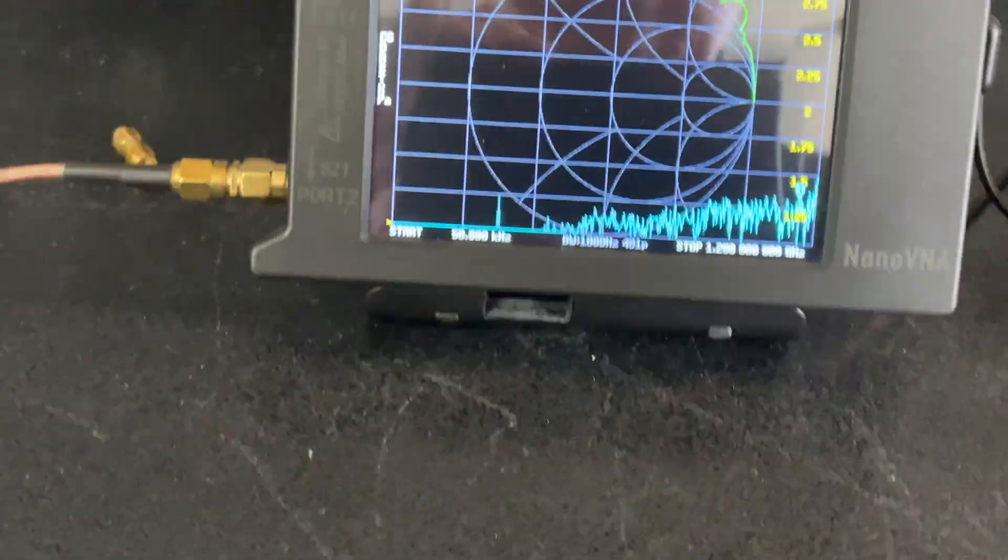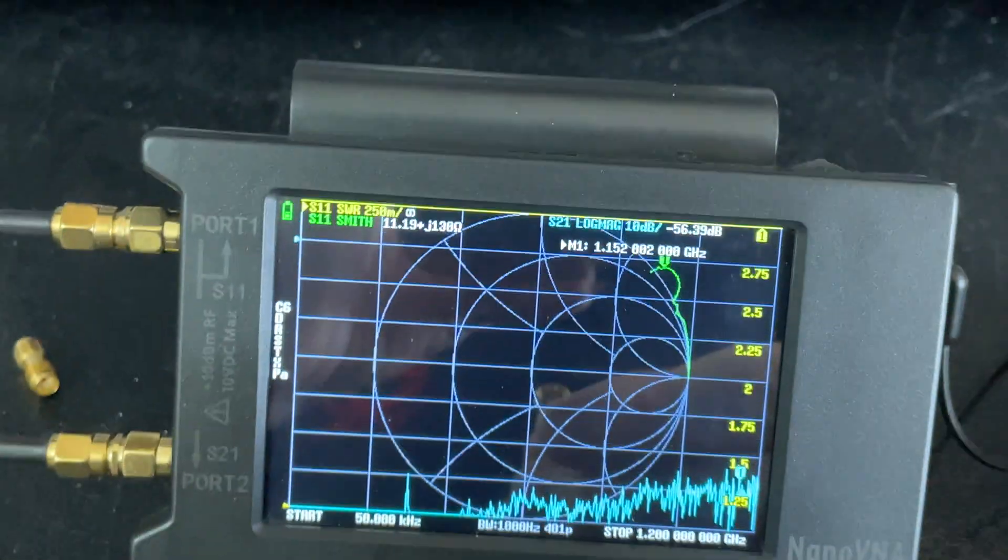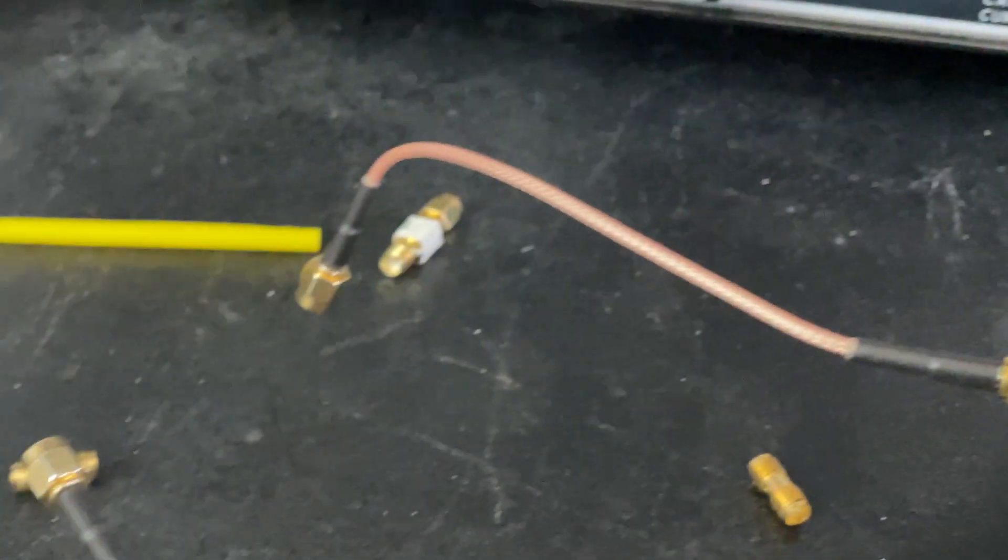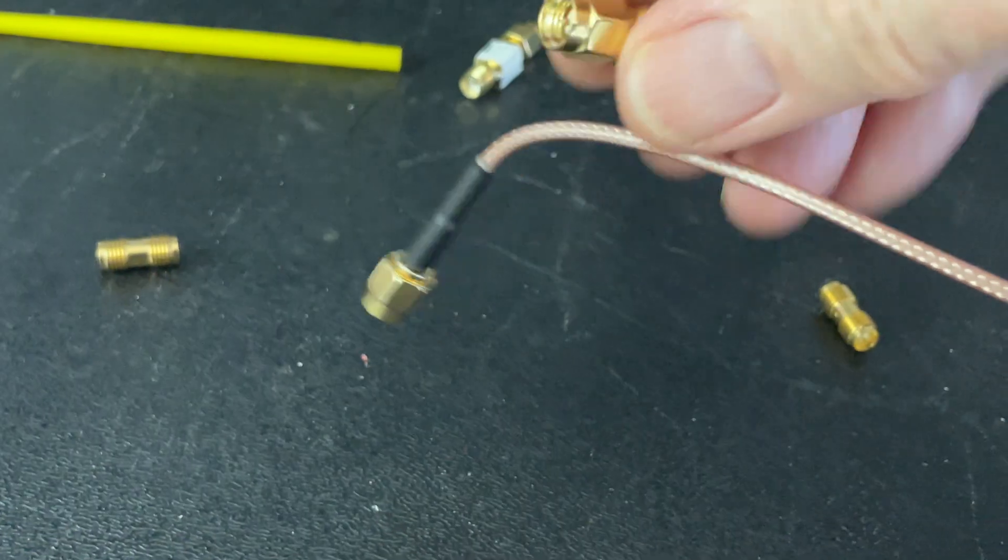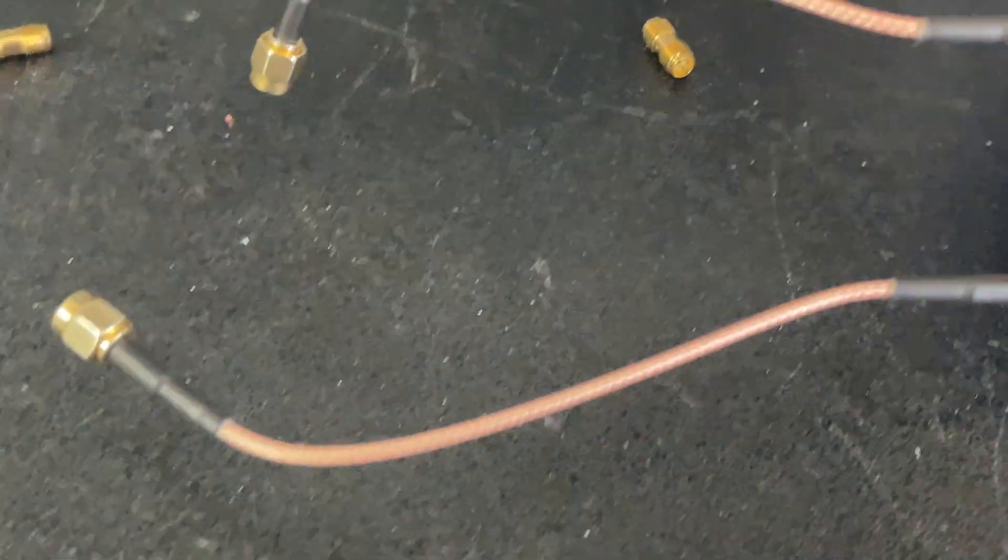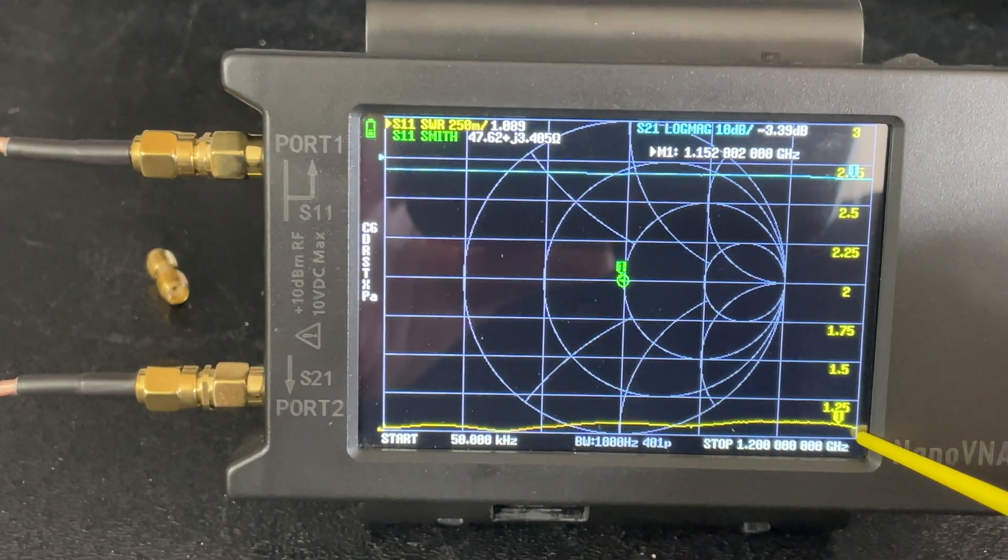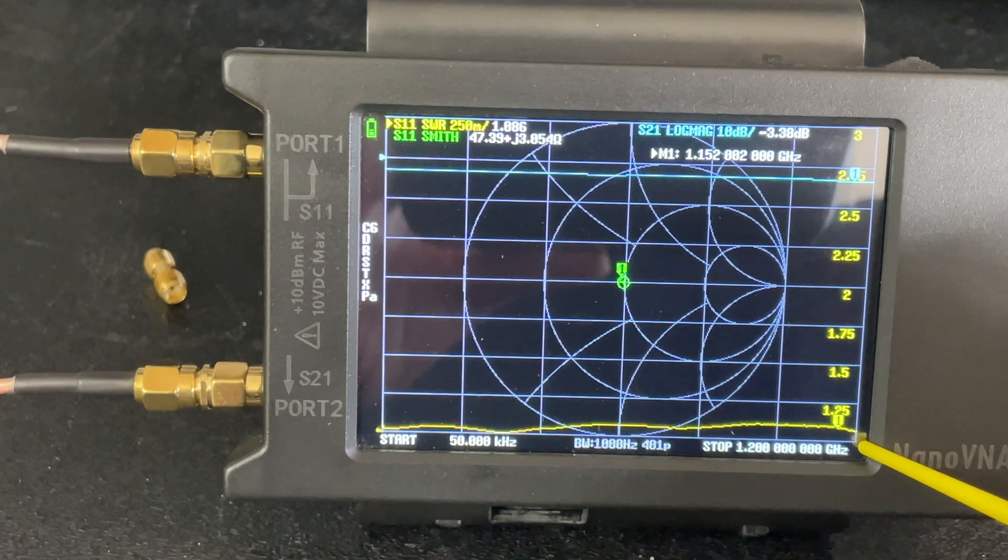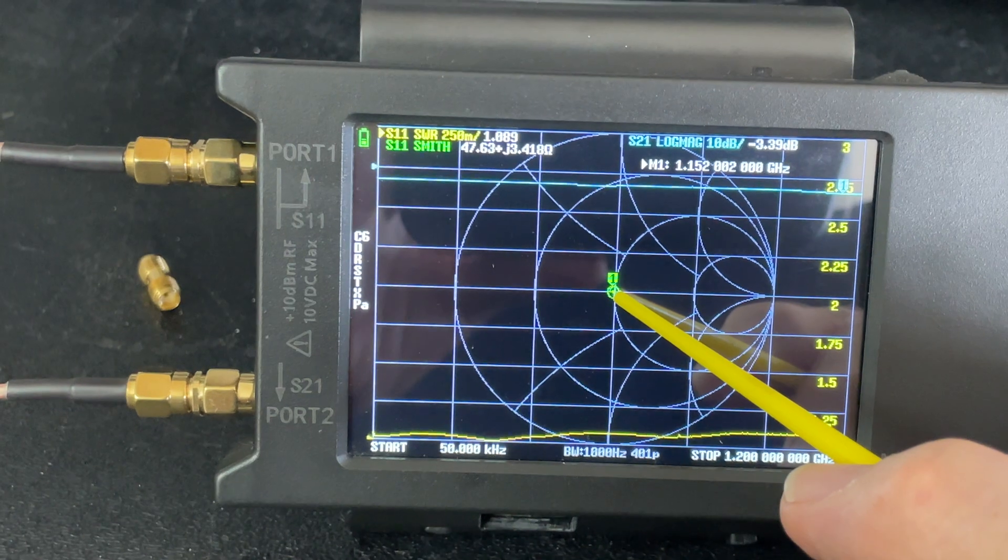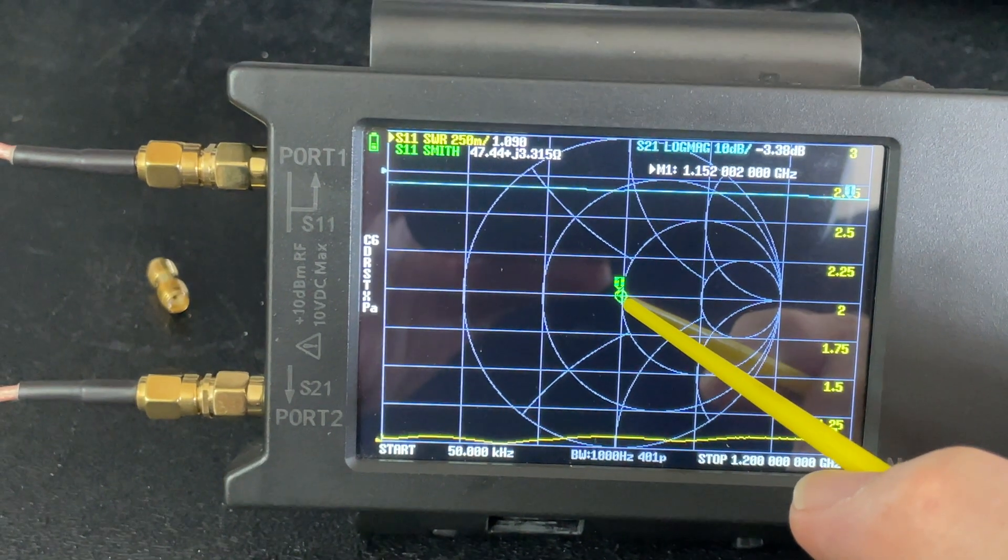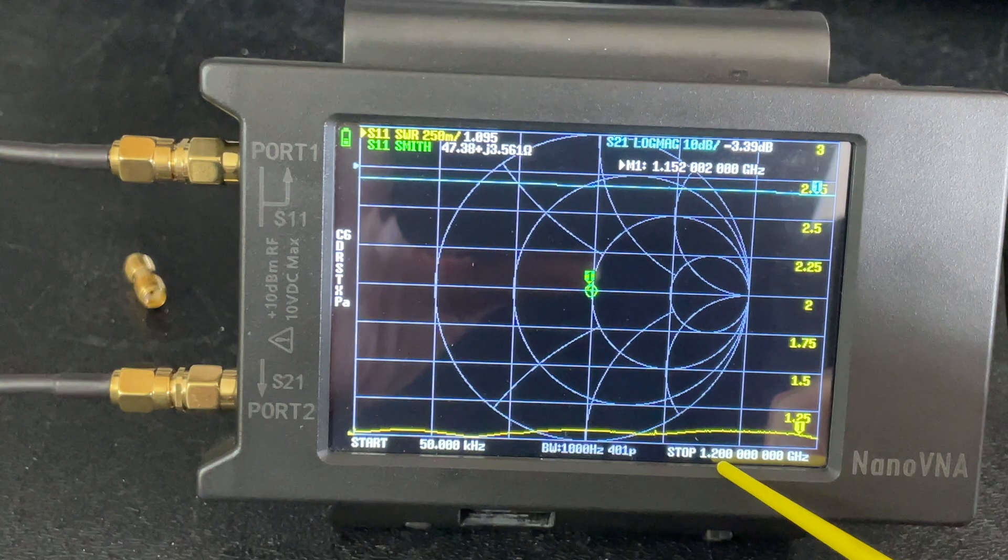I'm going to go ahead and hook up the 3 dB. We'll go through each one. It's already calibrated. So my calibration plane is right here. We're going to hook them up and take a look. It looks pretty good. You can see the SWR is very low. What's important here also is how resonant it is. Close to 50 ohms from 50 kilohertz all the way up to 1.2 gig.